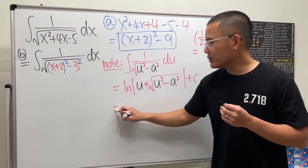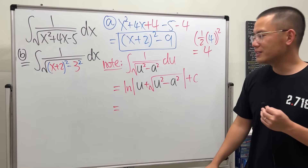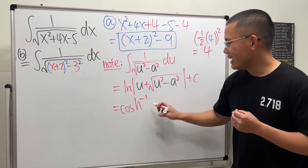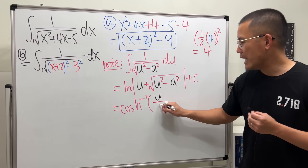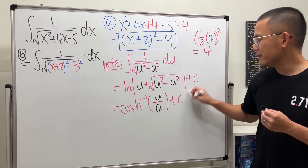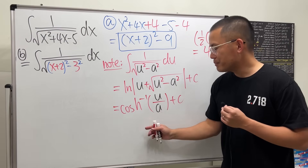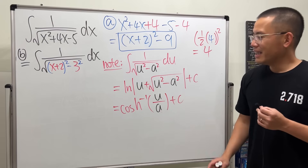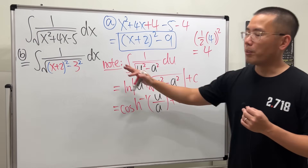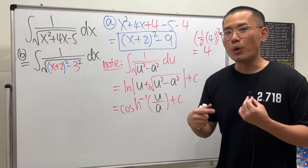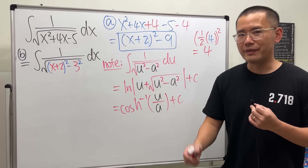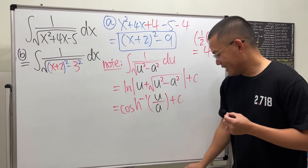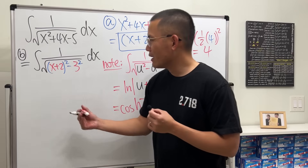The other option is to use the inverse hyperbolic cosine: cosh⁻¹(u/a) + C. That form can be easier, but we may not be as familiar with it. Either way is fine for part B, but for part C our final answer should be in terms of ln, so I'm going to stick with the ln standard result.